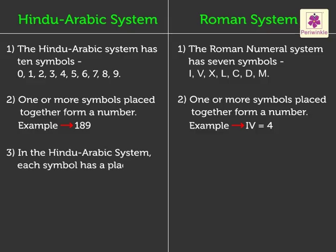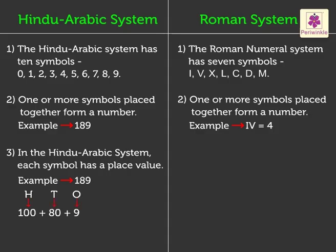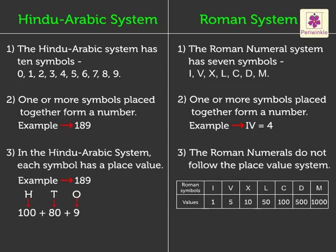In the Hindu-Arabic system, each symbol has a place value. For example, look at the number one hundred eighty-nine. When we split this number, we get one hundred plus eighty plus nine — that is, one hundred, eight tens, nine ones. The Roman numerals do not follow the place value system, and each symbol has a definite value given to it. I has a value of one.